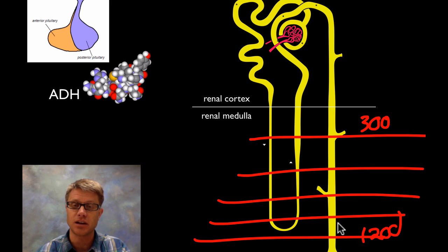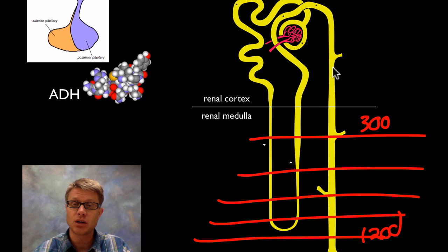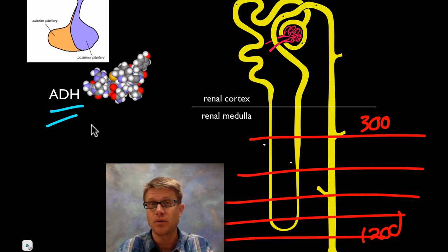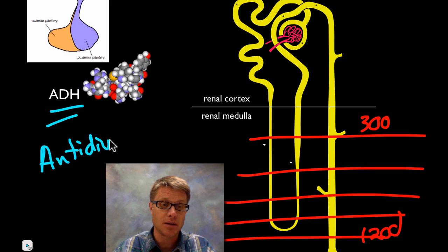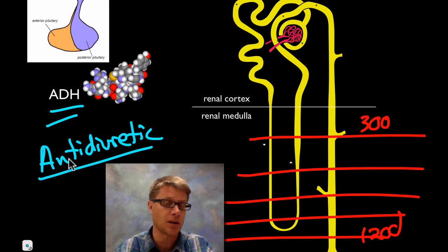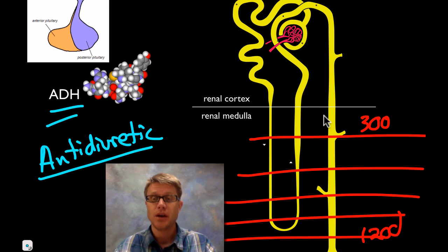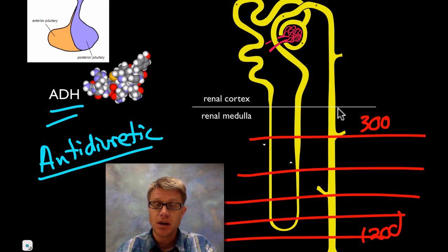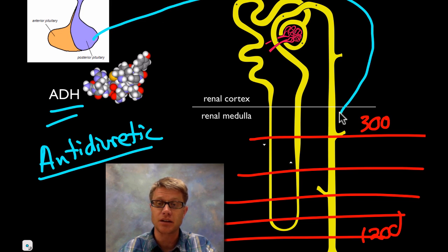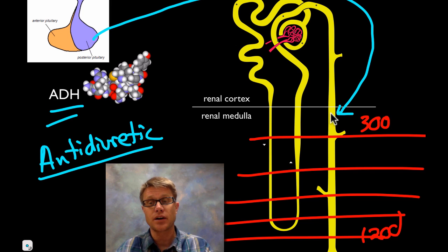This is the collecting duct, and now we have control over the water. The filtrate is eventually going to become urine, but we can control whether or not we let water out using a hormone called anti-diuretic hormone. Think about the name — it's anti-diuretic. A diuretic causes water release, so an anti-diuretic causes us to hold onto water. If we release anti-diuretic hormone, which comes from the posterior pituitary, it interacts with the collecting duct and allows water to pass through.